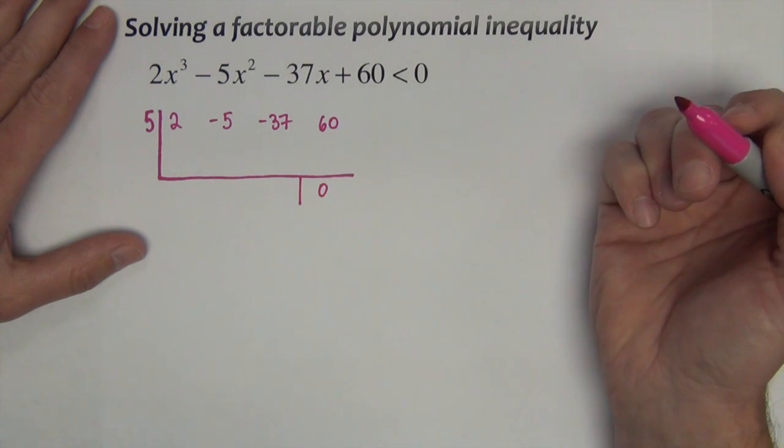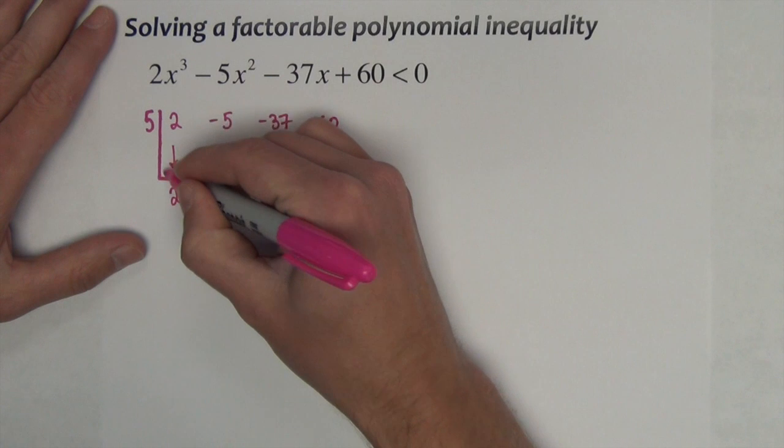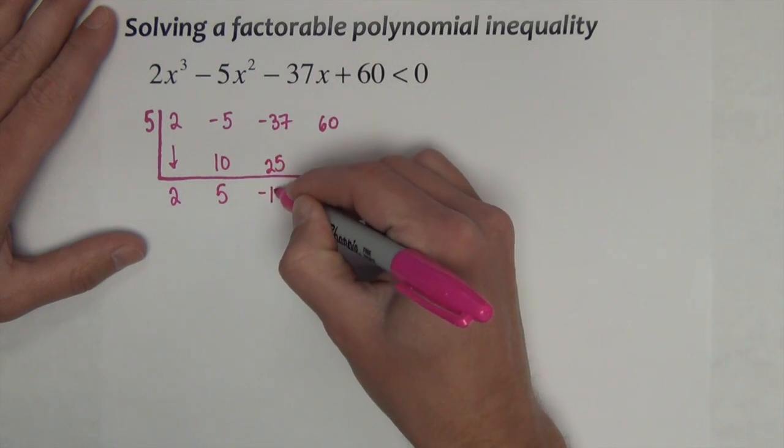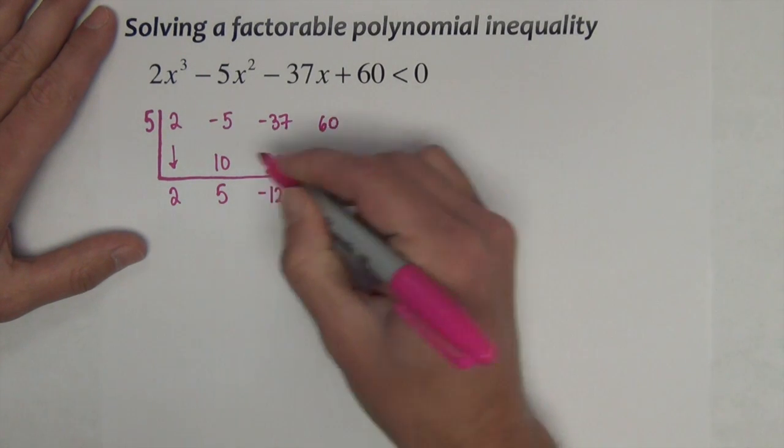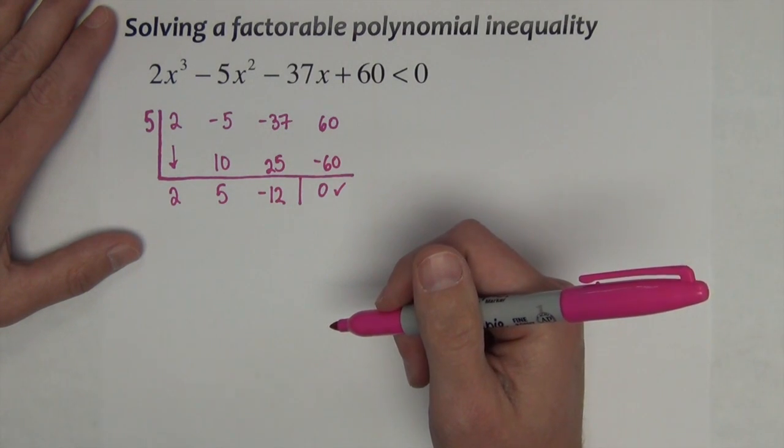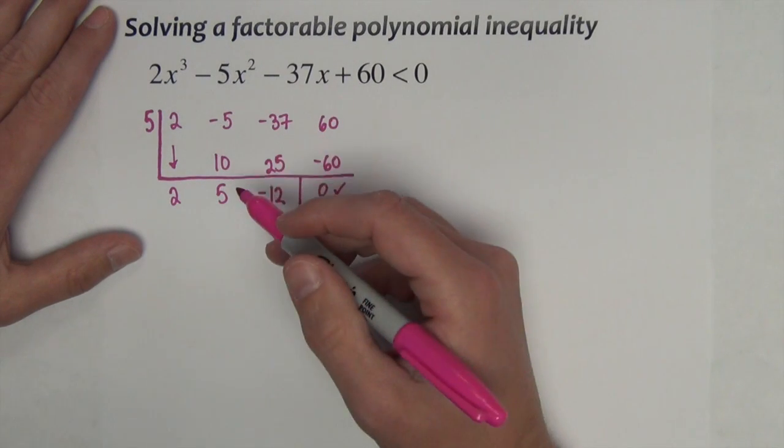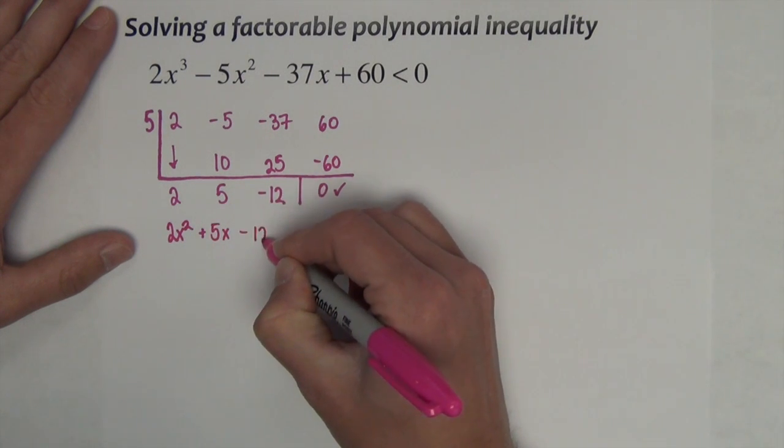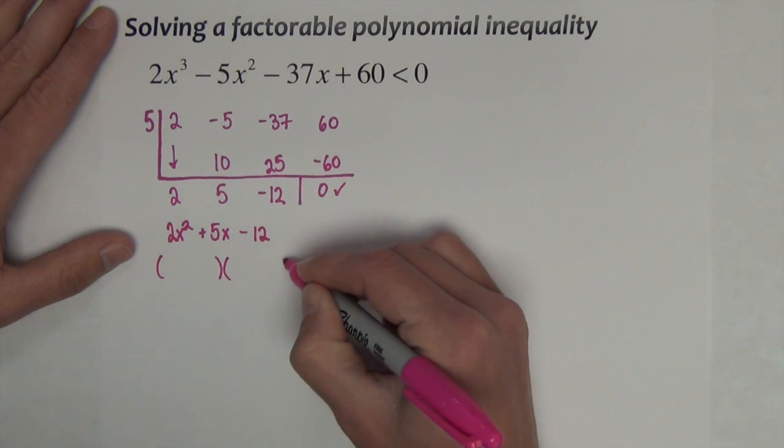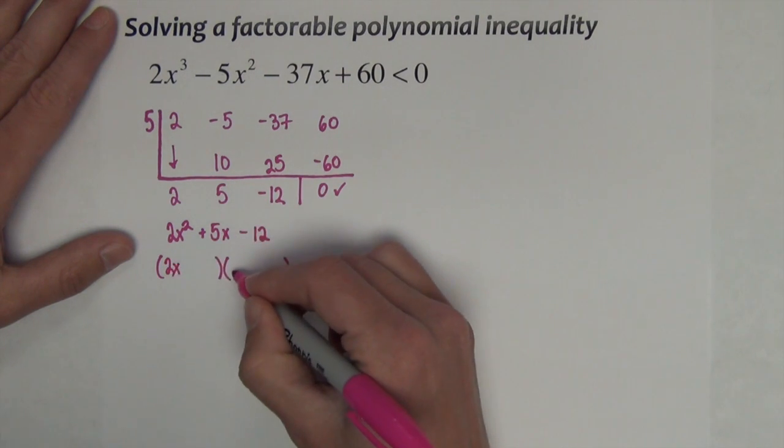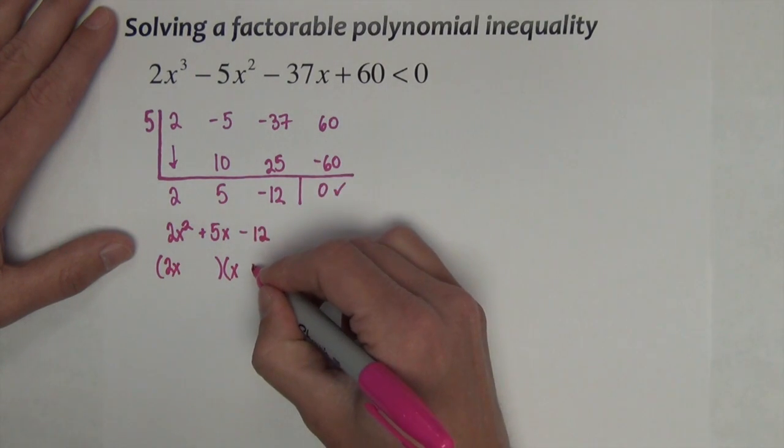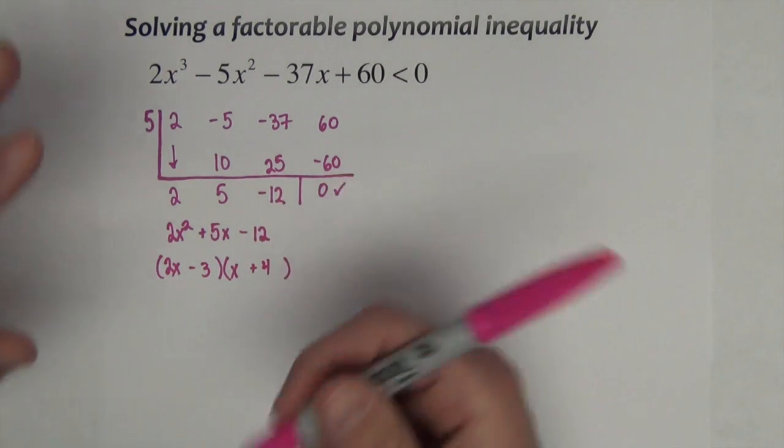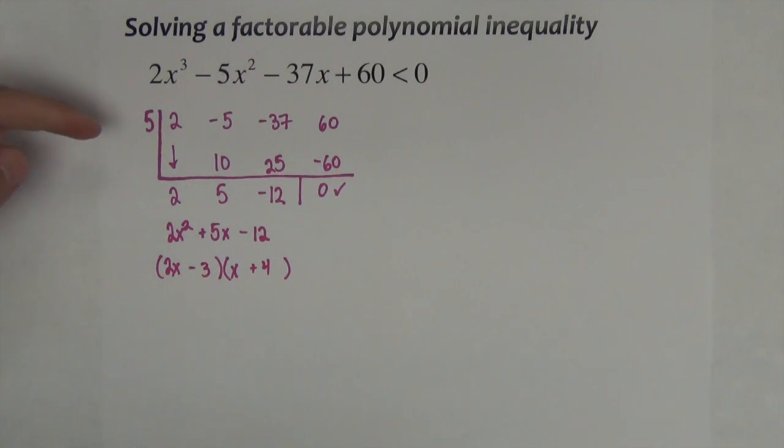We should get a remainder of 0 here if this is in fact a zero. We bring down the 2 and we multiply together, we add together here and we multiply. We add and we multiply. And sure enough, x equals 5 is a zero of this function. Therefore, we'll have a related factor, x minus 5. But let's take now this 2x² + 5x - 12 and see if we can use more traditional factoring techniques to finish the factorization.